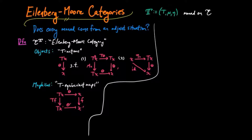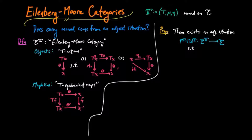Let's prove the following proposition: there exists an adjoint situation where F^t is left adjoint to U^t from the Eilenberg-Moore category e^t to e, such that this adjoint situation induces the monad t.